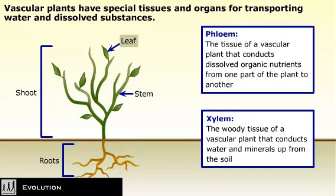Leaves are the organs of vascular plants that act as sunlight collectors and are the site of most photosynthesis. Stems support the organs of the shoot and are pathways for fluid flow.